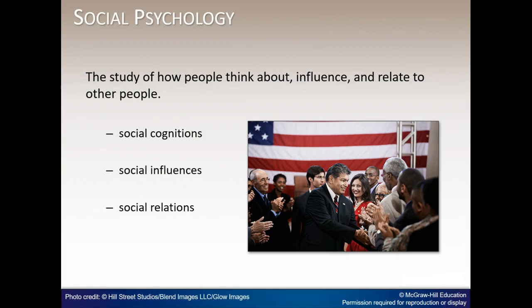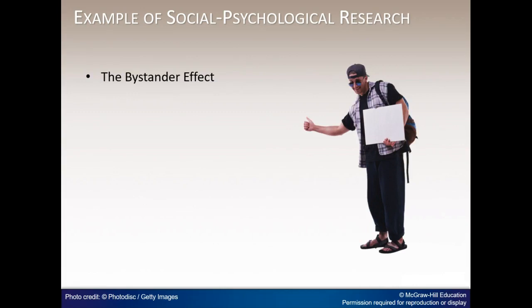Social psychology is distinctive in at least two ways: its connection to real-life events, and its reliance on experimental methods. The emergence of social psychology as a field can be traced back to the years after the U.S. Civil War. The field continues to research issues such as attitudes and racism, takes inspiration from real-life events, and its findings have implications for many aspects of everyday life. Social psychologists often use experimental methods to conduct their research. The case of Kitty Genovese prompted researchers to study whether the presence of others would make it less likely that an individual would help a person in distress.